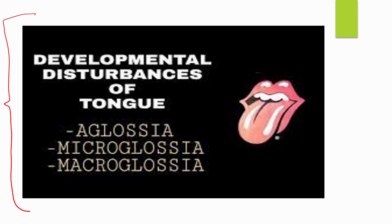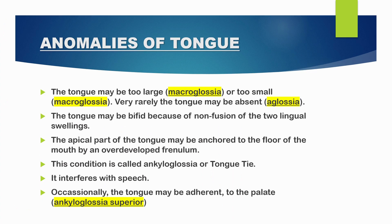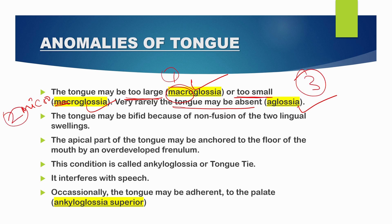The last topic is the clinical features or developmental disturbances of the tongue. These are: aglossia — complete absence of the tongue; microglossia — the tongue is too small; and macroglossia — the tongue is too large. Additionally, when the two lingual swellings fail to fuse, the tongue is called a bifid tongue.